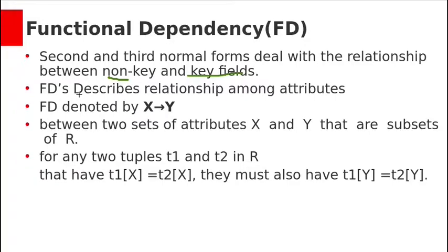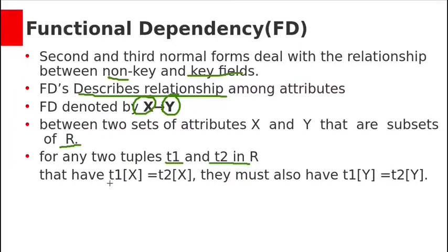Functional dependencies describe relationships among attributes. A functional dependency, denoted by X→Y, is defined between two sets of attributes X and Y that are subsets of a relation R. For any two tuples t1 and t2 in R, if t1[X] equals t2[X], they must also have t1[Y] equal to t2[Y].